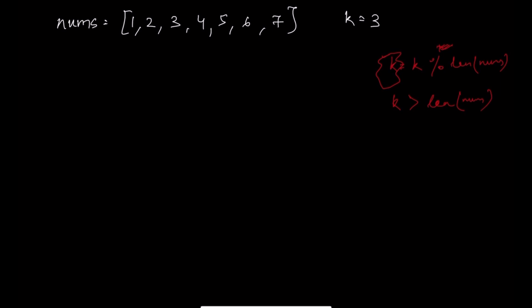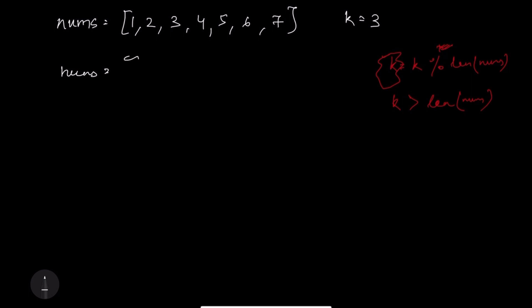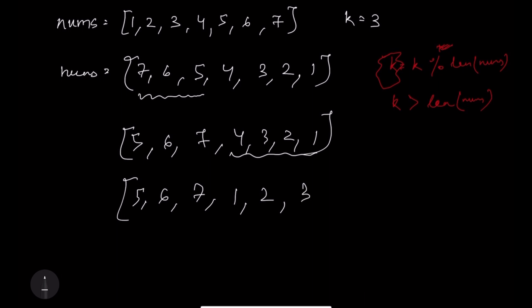Now the second part is we will just reverse our array, so when we reverse our array it would look something like this: four, three, two, one. After that, we will reverse the part till k, so that would make it something like this: five, six, seven, four, three, two, one. Then we would reverse the other part, so that would be five, six, seven, one, two, three, four.